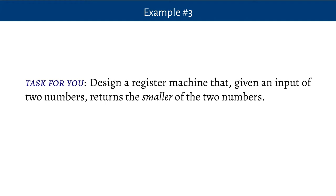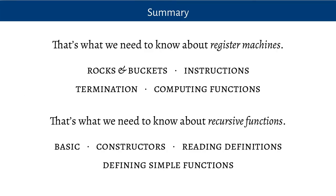Next week we will show that these two very different ways of defining functions — by way of register machines on the one hand, and that original definition of recursive functions in terms of the successor function, the zero function, the identity functions, composition, primitive recursion, and minimization on the other — come to define the same class of functions, which we call the recursive functions. Here's what we've covered in these two videos: register machines with rocks or marbles and buckets, the instructions, termination, and how a register machine computes a function. And the notion of recursive functions — the basic functions, the constructors, how to read those definitions, and how to define simple functions by means of primitive recursion, composition, and minimization.